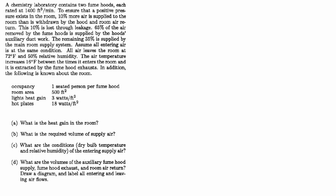They want to know: (a) What is the heat gain in the room? (b) What is the required volume of supply air? (c) What are the conditions—dry bulb temperature and relative humidity—of the entering supply air? And (d) What are the volumes of the auxiliary fume hood supply, fume hood exhaust, and room return air? Draw a diagram and label all entering and leaving air flows. So let's start with the heat gain in the room.